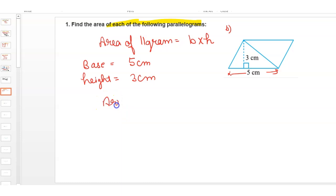So area is equal to 5 into 3, which equals 15 centimeters squared. This is your answer for this question: 15 centimeters squared is the area of the parallelogram.